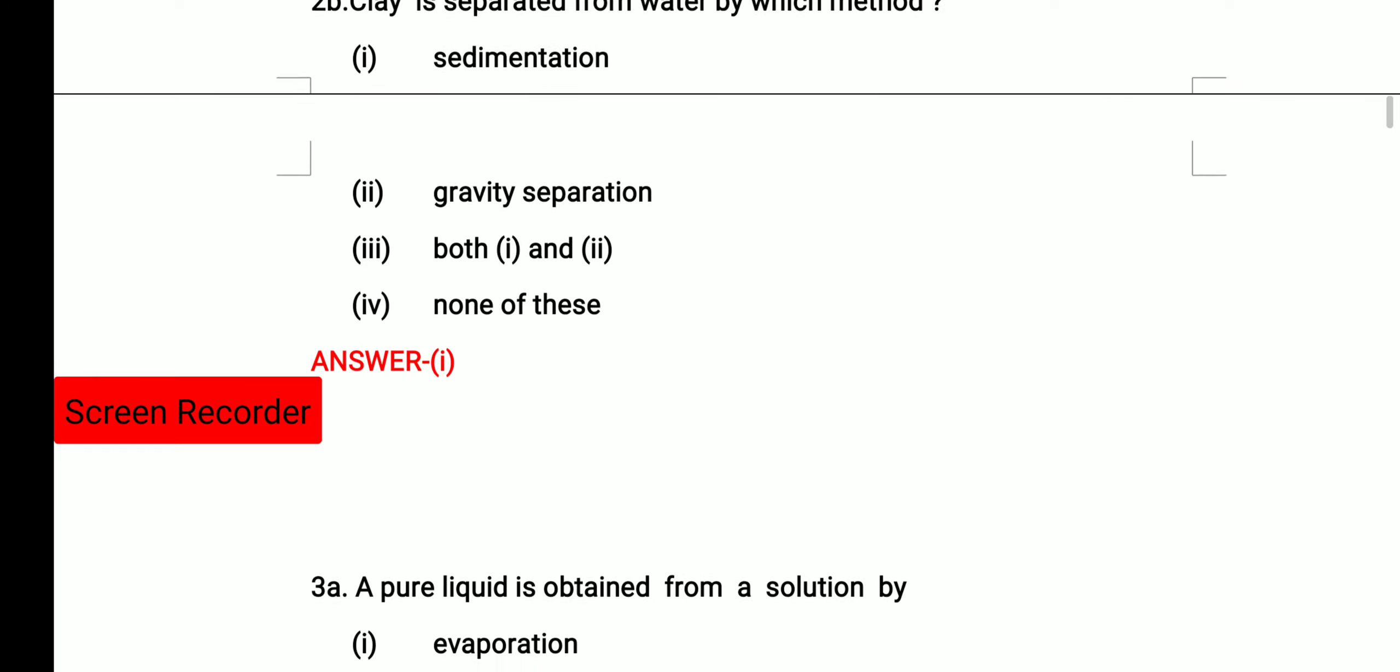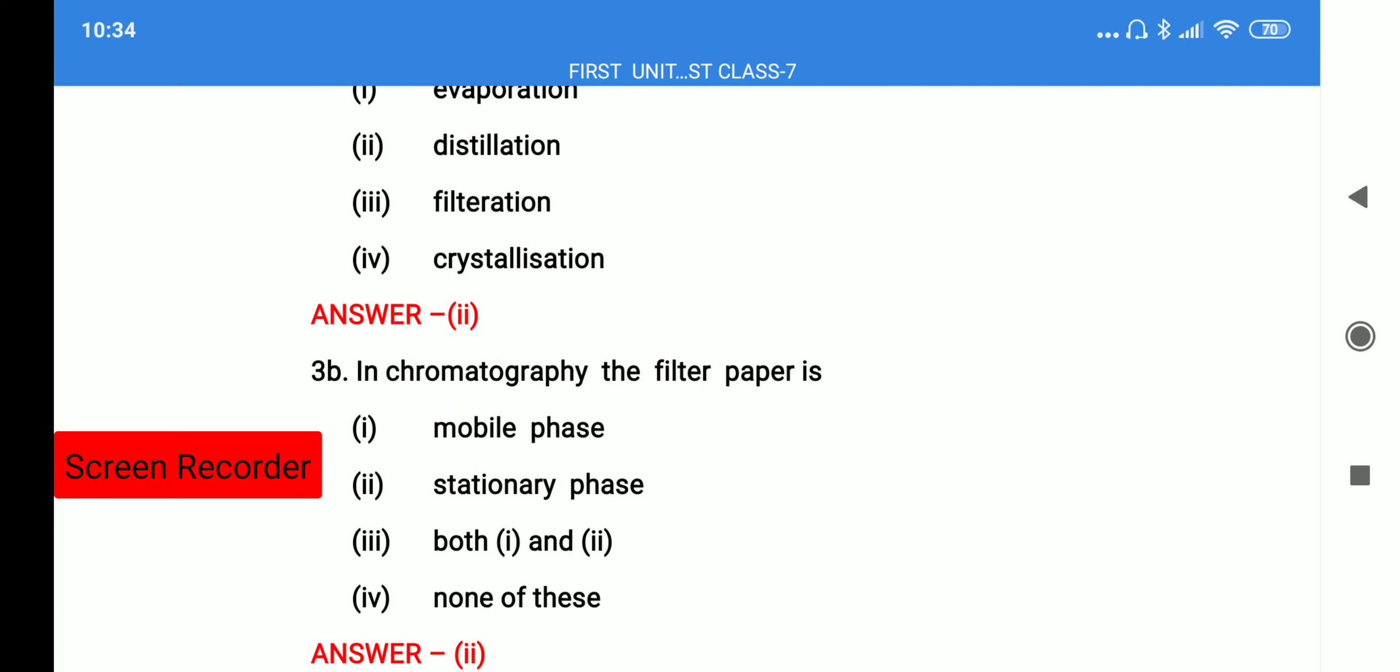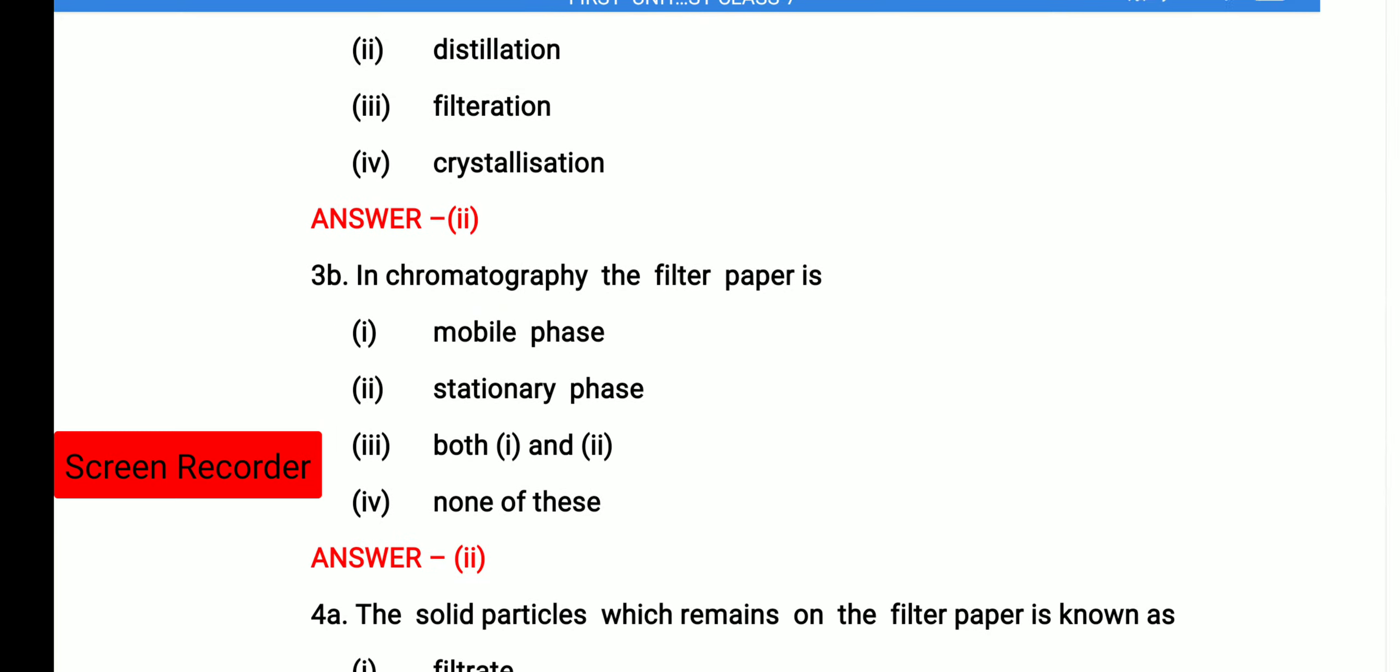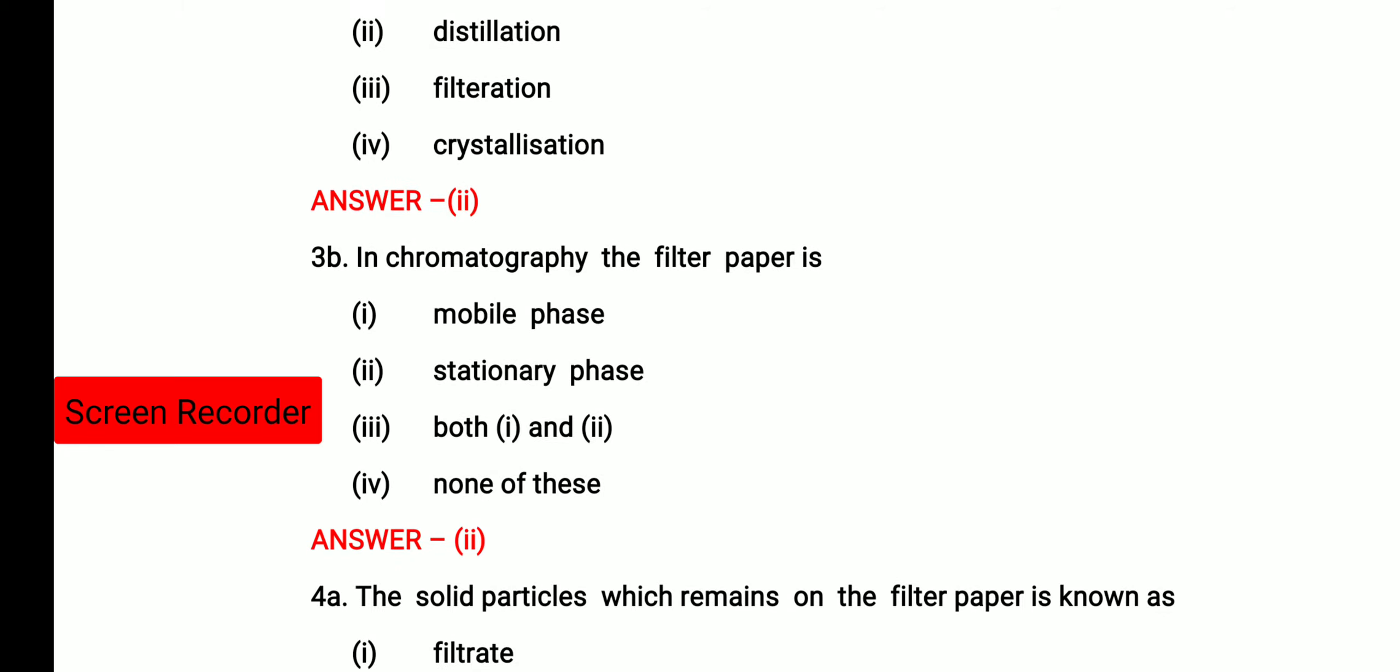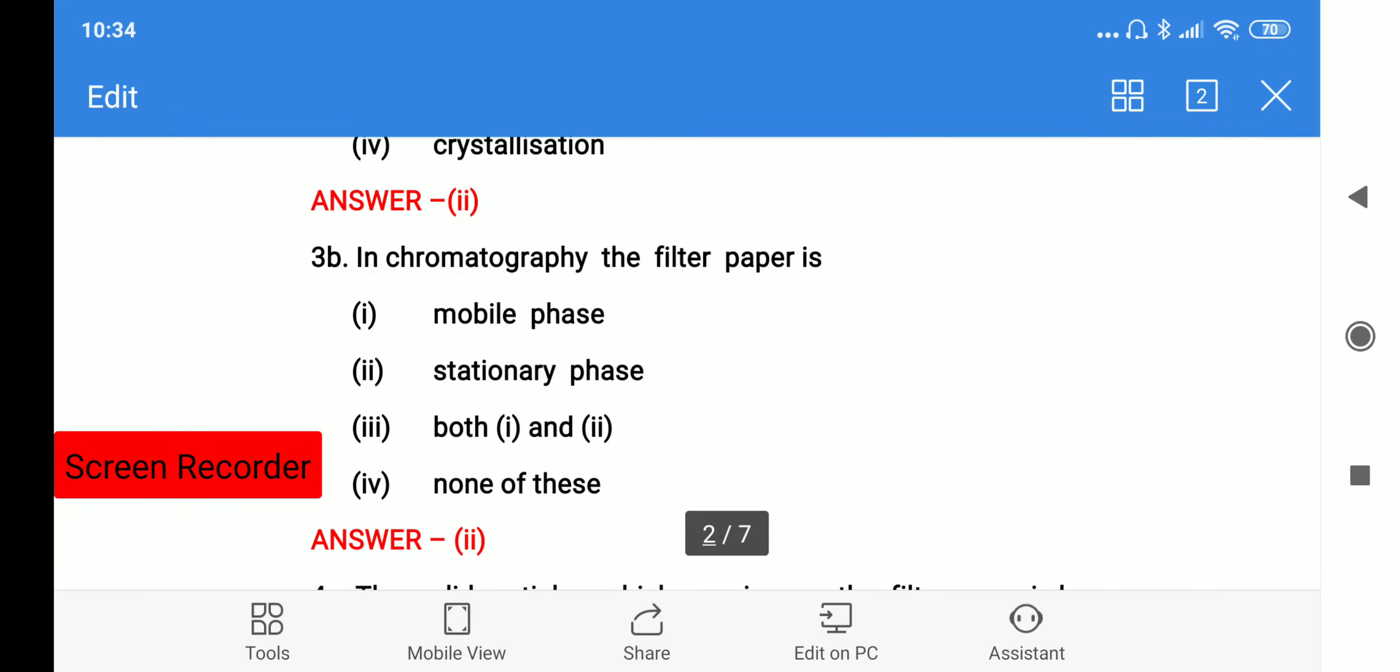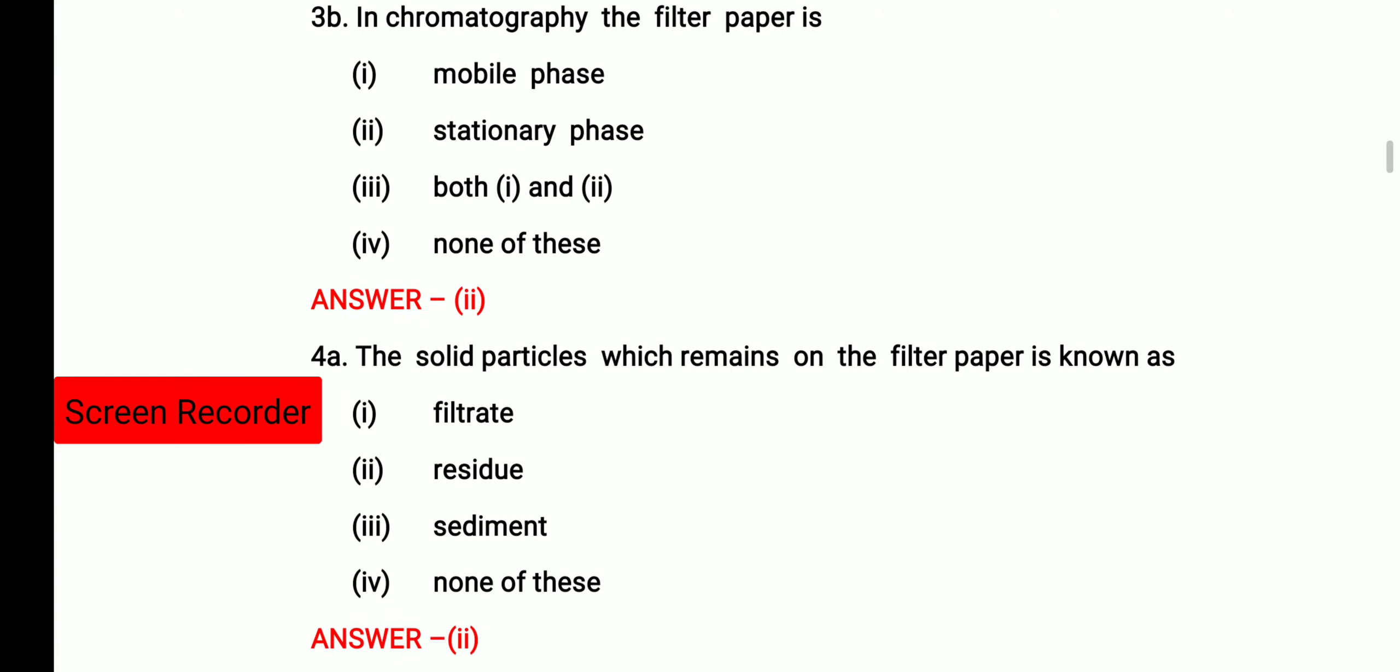Then a pure liquid is obtained from a solution by evaporation, distillation, filtration, crystallization. You know that by distillation we get the pure liquid. So option 2 is the correct answer. Then the next question was in chromatography, the filter paper is in which phase. So it is in the stationary phase. Option 2 is correct.